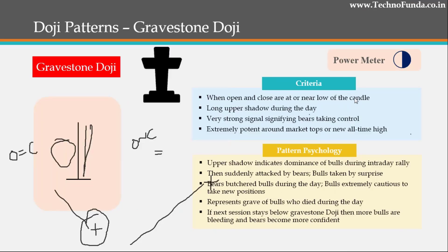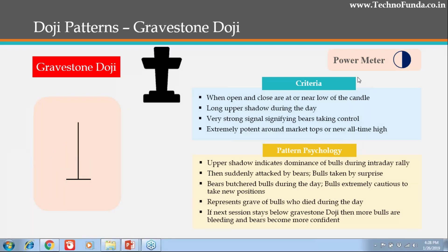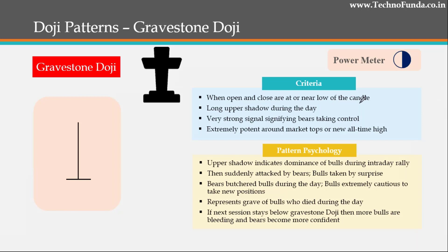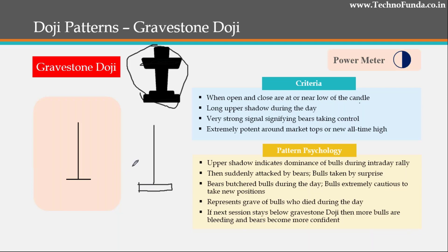This is a variation of Doji known as Gravestone Doji. A lot of candlestick charting terminology is derived from war — when soldiers used to die and get wounded and were put in the grave. That signifies the equivalence for the Gravestone Doji. There is an intuitive picture here: if you ignore the middle part, it basically looks like a grave, similar to how a gravestone looks.